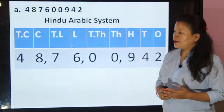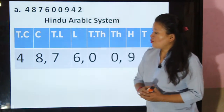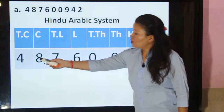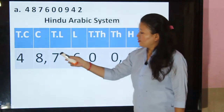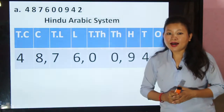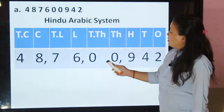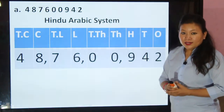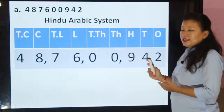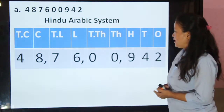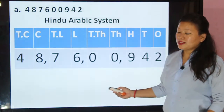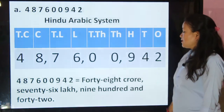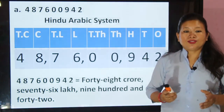Now let's write the number name. You can see 48 is in the crore place, so that is 48 crore. 76 is in the lakh place, so that is 76 lakh. 00 is in the thousand place, so there is no digit there. 9 in the hundreds place is 900, 4 in the tens place is 40, and 2 in the ones place is 2 — giving 942. So the number name according to the Hindu Arabic system is: 48 crore, 76 lakh, 942.